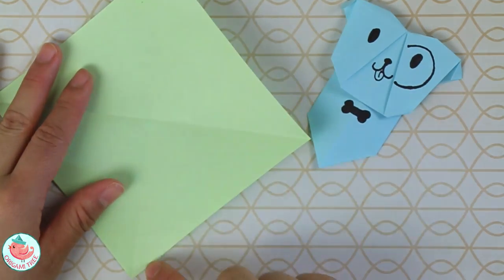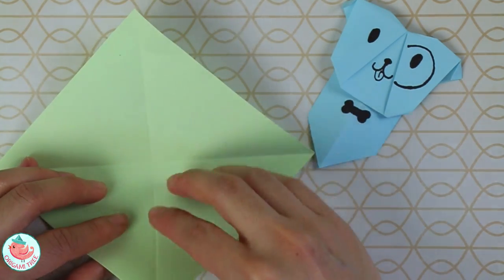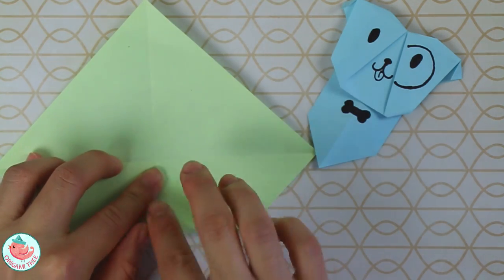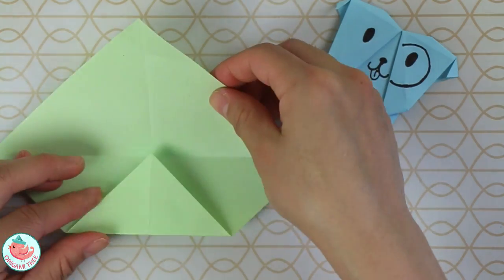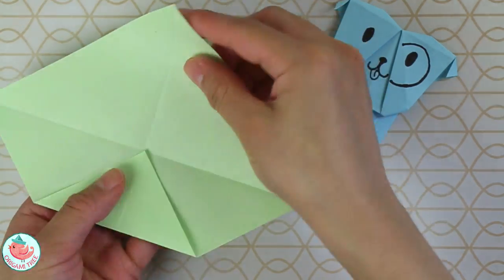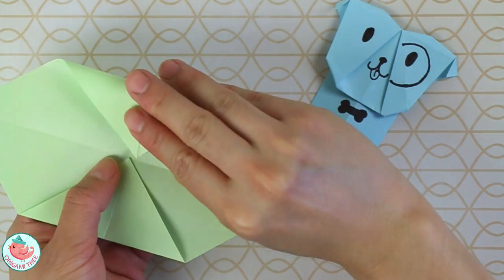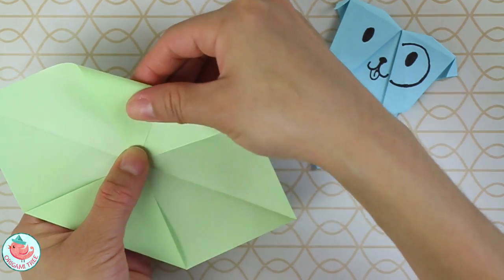Take this bottom tip and align it to the center point. You're going to fold it straight up and crease that in. Then repeat the same thing at the top—fold it straight down to the center point and crease that in.